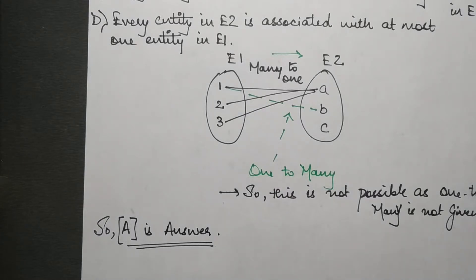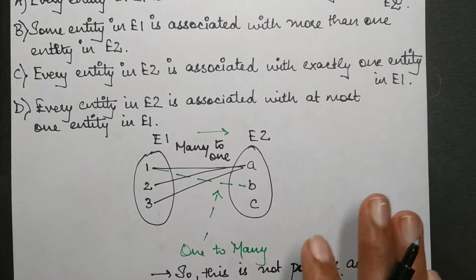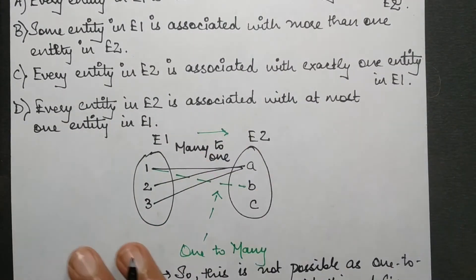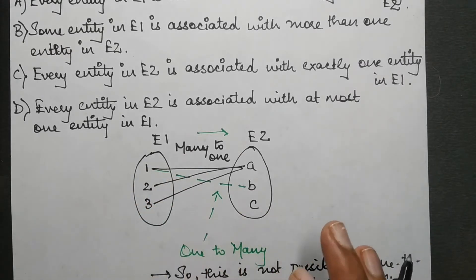So likewise, whenever you get some similar kind of question, the best method is just to draw a relationship, an entity relationship diagram in this manner and try to figure out what is the other possibility or what is the constraint, what is the restriction. And in that manner you'll get to know about the answer. So that's all for this session. I'll see you all in the next session with some more GATE 2018 questions. Till then stay tuned and happy learning. Thank you.